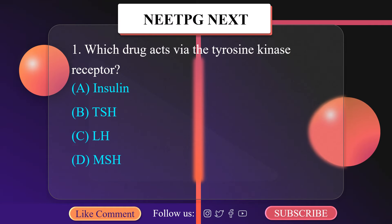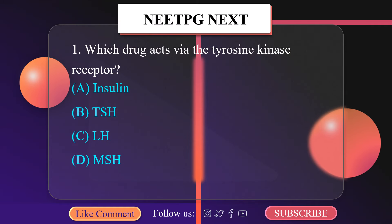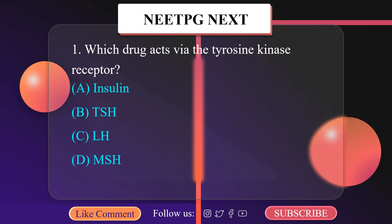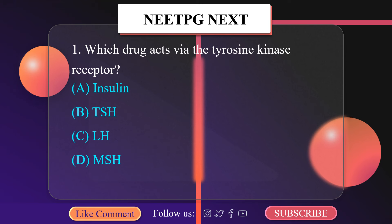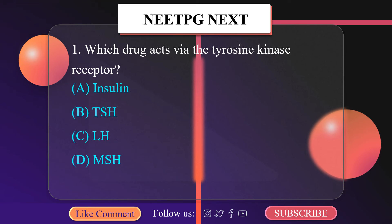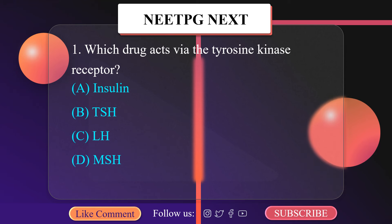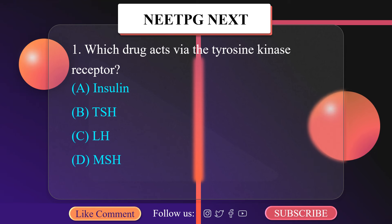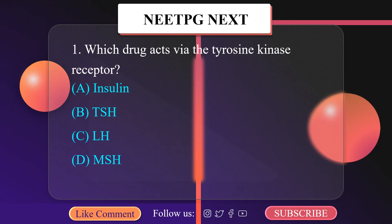Which drug acts via the tyrosine kinase receptor? A. Insulin, B. TSH, C. LH, D. MSH.